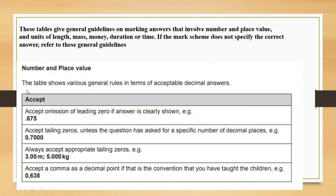Let's look into number and place value. The table shows general rules for acceptable decimal answers. They would accept if you write .675 instead of 0.675. They also accept trailing zeros such as writing zeros after the decimal. They accept trailing zeros in context, such as 3.00 meters and 5.00 kg. They would also accept a comma instead of a decimal point, for example 0,638.